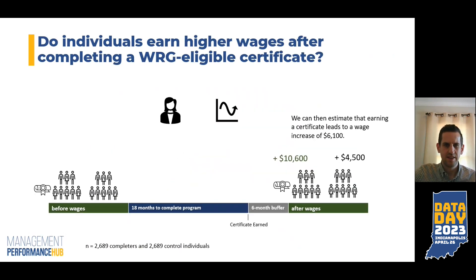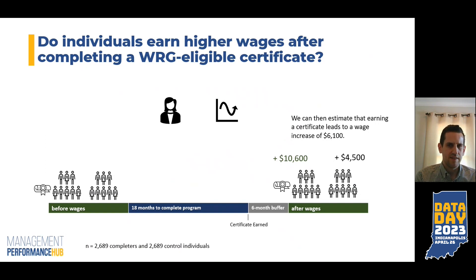So what did we find? We matched roughly 2,700 completers with roughly 2,700 control individuals and found that the control individuals also saw a wage increase at the median of $4,500. Similar to the plant example at the beginning, we can then estimate that earning a certificate leads to a wage increase of about $6,100 overall.